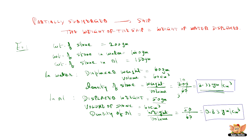From Archimedes' principle, we can find out the density of an object by finding the volume of the stone, and then find the density of another fluid in which the same object is immersed. To find the densities of various other fluids, we can use this Archimedes' Law.